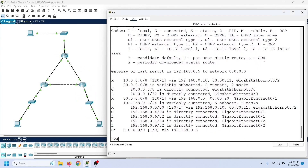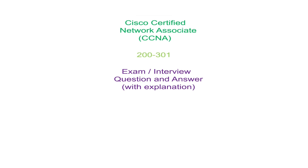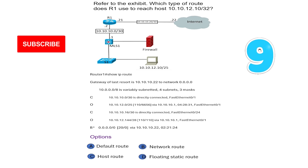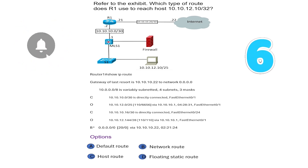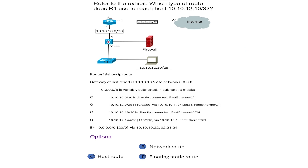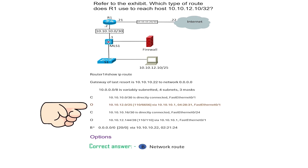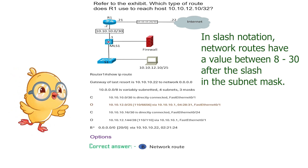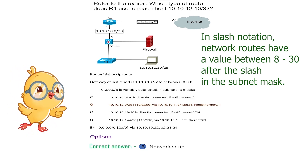Let us take a CCNA exam question based on the route types. In this network, what type of route will R1 use to reach host 10.10.12.10/32? The correct answer is the network route. The router will use this route for the given address. A network route is a route that belongs to a block of addresses; in slash notation, it has a value between 8 to 30 after the slash. All these are the network routes. Therefore, the correct answer is option B.